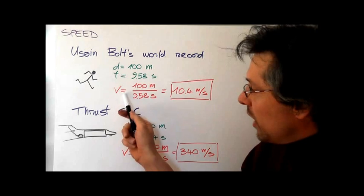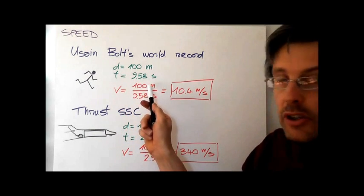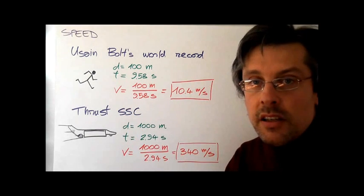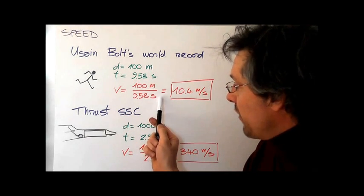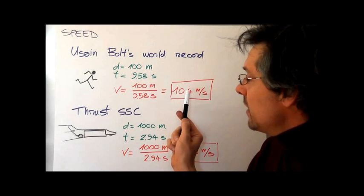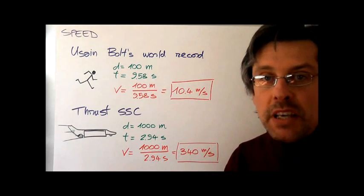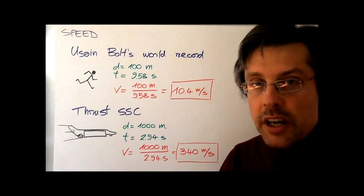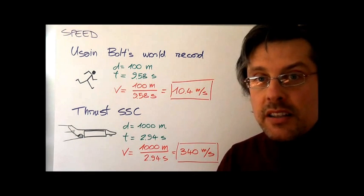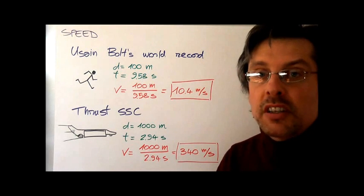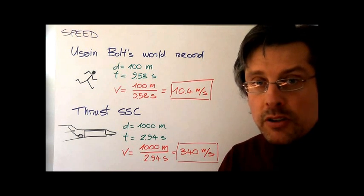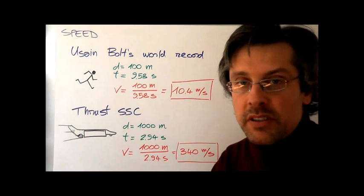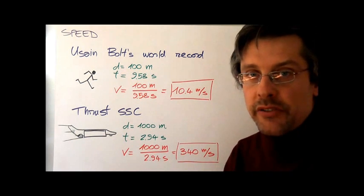And now we can work out the average speed of Usain Bolt during that race. Using the previous formula, we take the distance, 100 meters, divide by the time, 9.58 seconds, and you can find out that the average speed of Usain Bolt was 10.4 meters per second. As you can see, meters per second is the unit that we're going to use for measuring speed. We also use kilometers per hour, miles per hour, but the standard unit is meters per second.